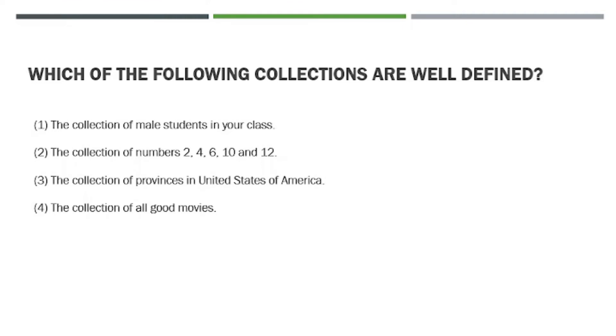As we can see, number 1, 2, and 3 are examples of well-defined sets, so they can be called sets. But number 4 is not well-defined because the word good is not defined. Therefore, it cannot be called a set because it's based on feelings. We don't know what good movies really are.